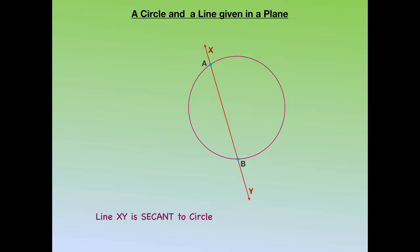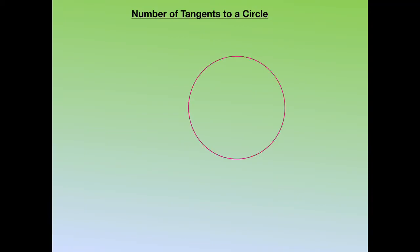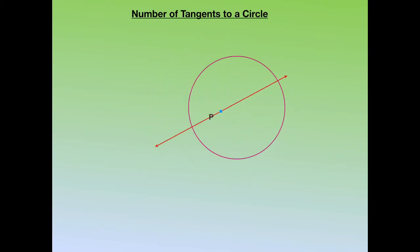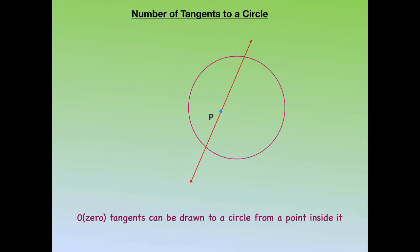Now how many tangents can be drawn to a circle? Let us see various possible cases. If the given point is inside the circle and we try to draw tangents from this point, any line through point P will intersect the circle at two points, so we cannot draw any tangent to a circle from a point inside the circle.